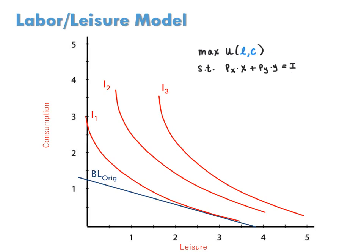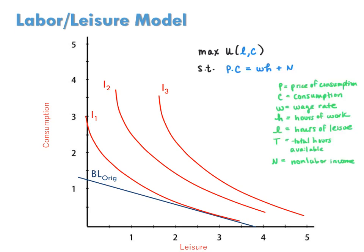Now suppose instead that utility comes from leisure time as well as consumption. The consumer's budget constraint still says expenditure on consumption equals income, but now looks like this. The left-hand side of the budget constraint still represents expenditure, where P is the per unit price of consumption and C is the amount of consumption.